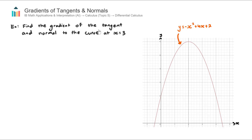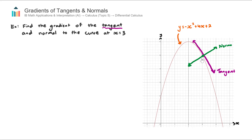This video looks at how to find the gradient of a tangent and normal at any point. The question says: find the gradient of the tangent and normal to this curve at x equals 3. At x equals 3, that's this coordinate here on the curve. A tangent at x equals 3 is a straight line that runs parallel to the curve at that point — shown here in purple. A normal to the curve at x equals 3 runs perpendicular to the tangent, passes through x equals 3, and is shown in green. They are perpendicular, meeting at a right angle.